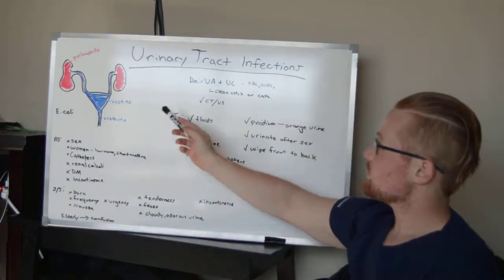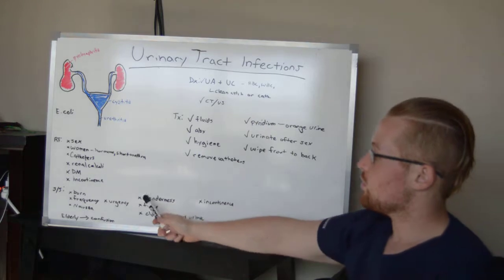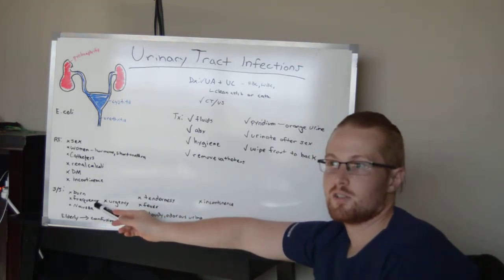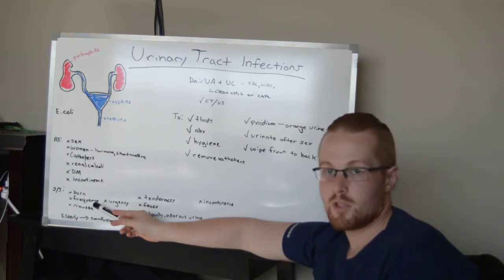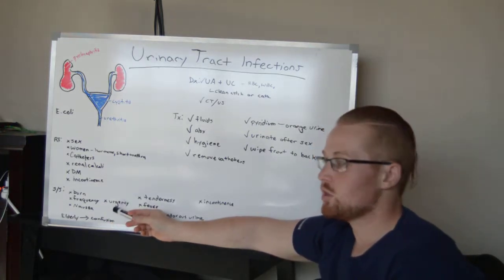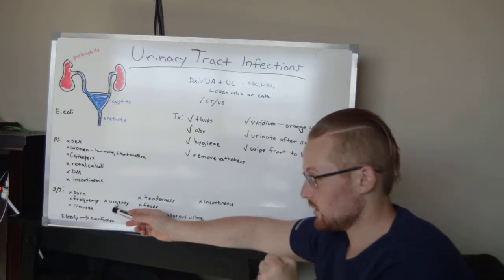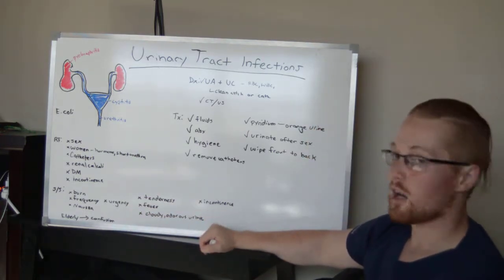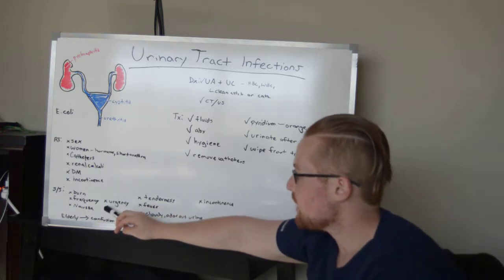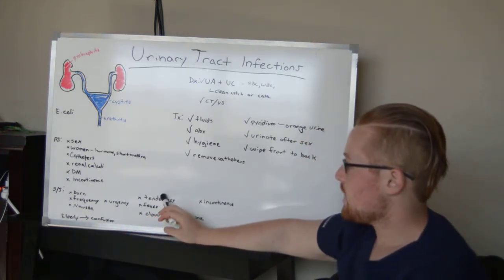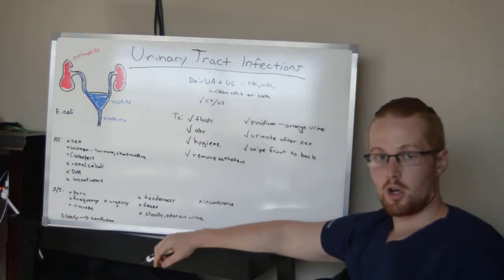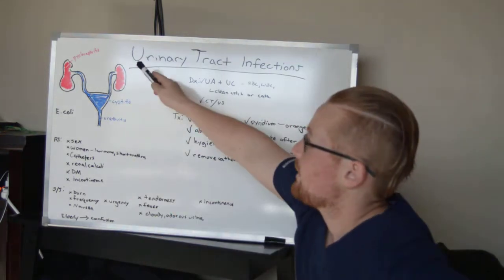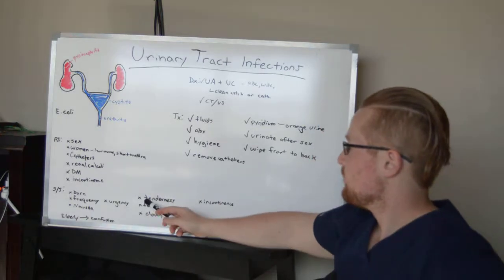Signs and symptoms of urinary tract infection: a burning upon urination, frequency which means urinating more times than normal, and urgency which is you got to go suddenly. Frequency and urgency can lead to the sign of urinary incontinence. You may have nausea and tenderness—both of these would be referred. The tenderness can refer to the back, but be careful because so can pyelonephritis.